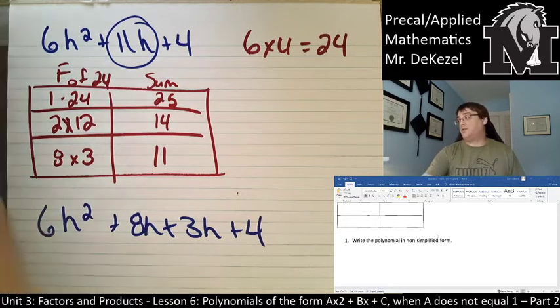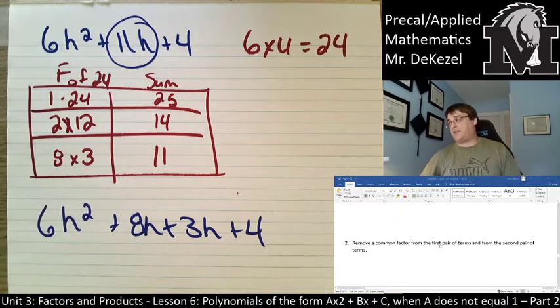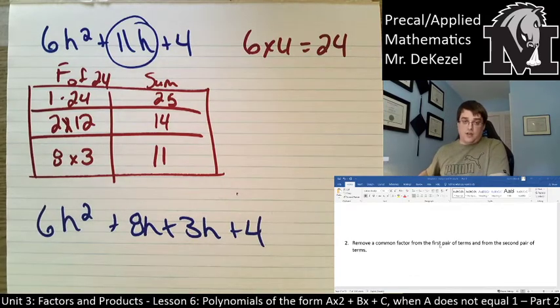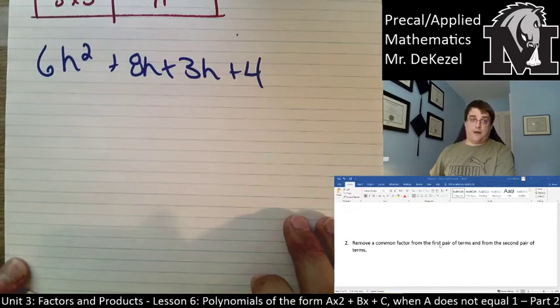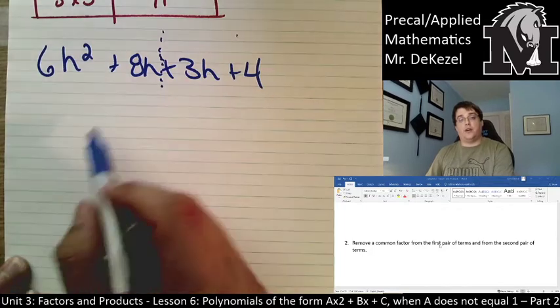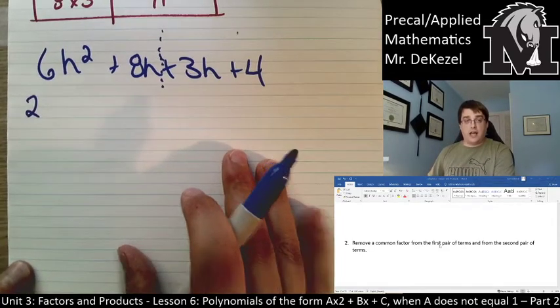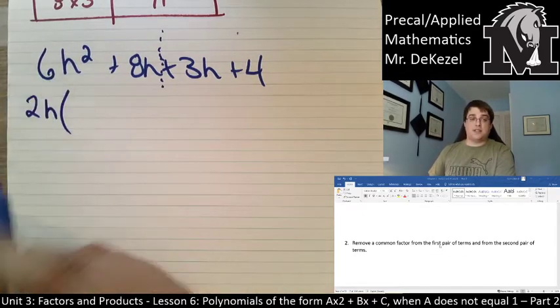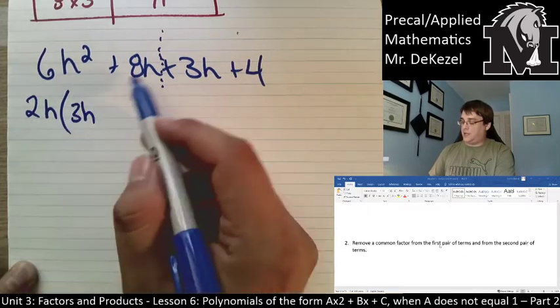What we're now going to do, if we look at step 2, is we're going to remove a common factor from each of the first two and the last two. So, a common factor between the first two, if we draw an imaginary line down the middle here, I can pull a 2h out. So, what times 2h would get me 6h squared? That would be 3h. And what times 2h would get me 8h? That would be 4.